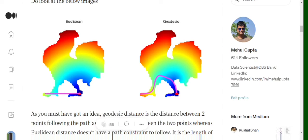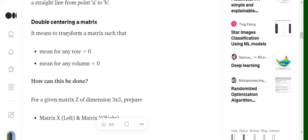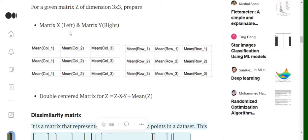The concept of geodesic distance is something that we will be using in Isomaps. Now, double centering a matrix. By double centering, we mean that in a matrix, the mean of any row and the mean of any column should be zero. How can double centering be done? First, we need to create matrix X in the left image and matrix Y in the right image.